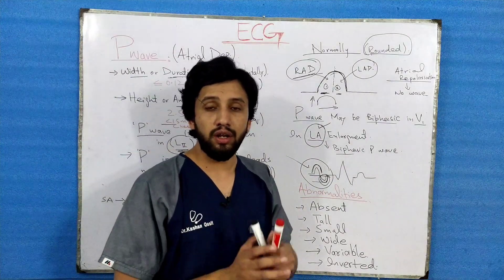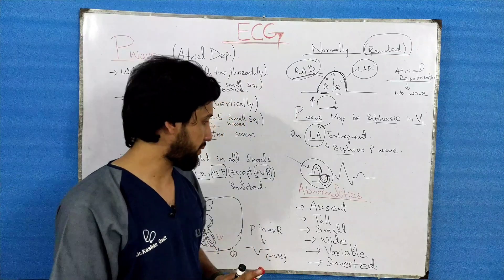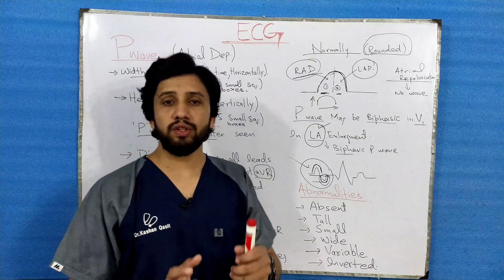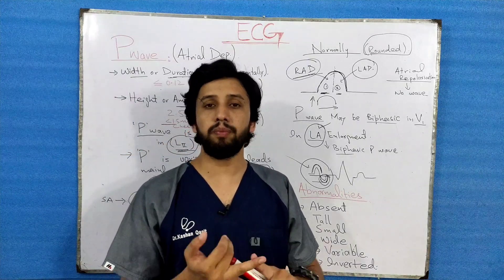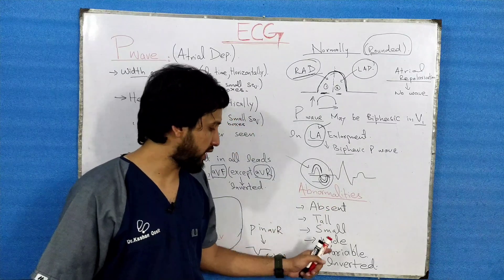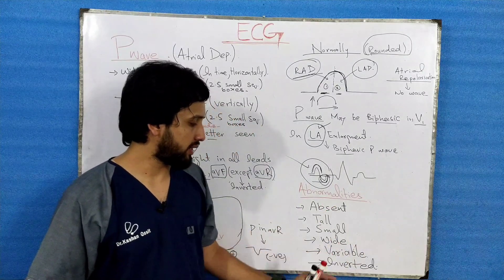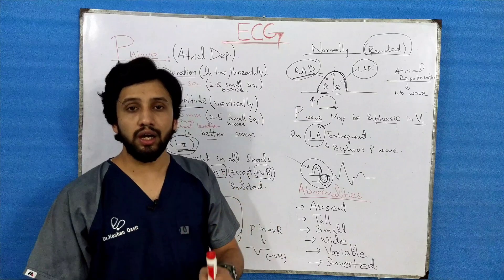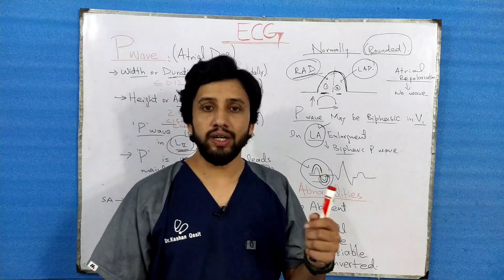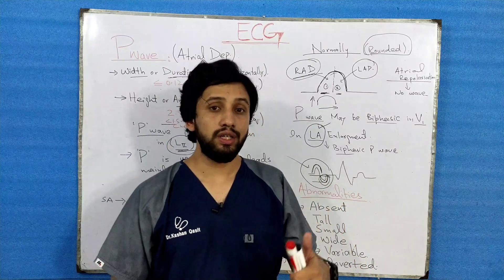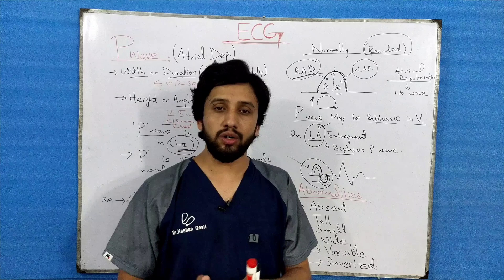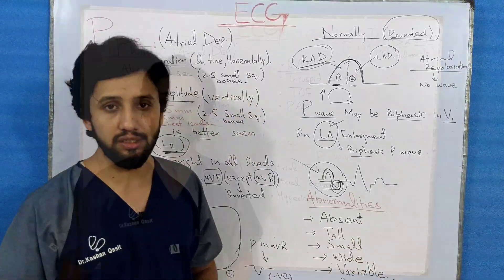The abnormalities of the P wave include: absent P wave, tall P wave, small P wave, notched P wave, variability in P wave pattern, and inverted P wave. These are the main abnormalities of the P wave, and we will discuss the causes of these abnormalities one by one in the next lecture on P wave abnormalities.